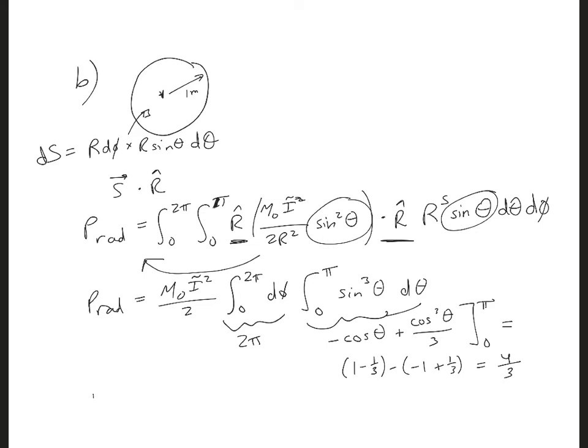So plugging this in, our P radiated: 2π from this, 4/3 from the theta integration, and we have η₀ i squared over 2. And that altogether is 4π η₀ i squared over 3.